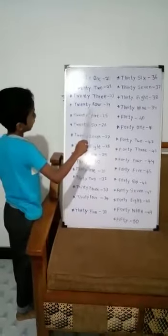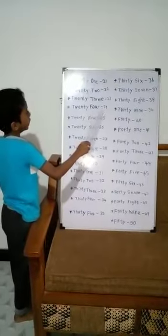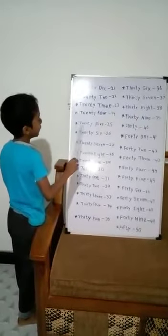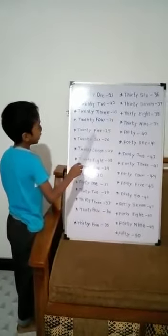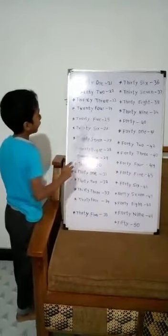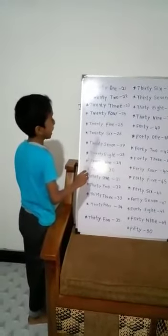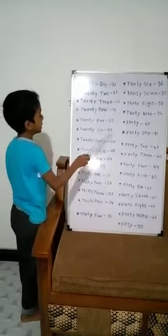Twenty, four, 24. Twenty, five, 25. Twenty, six, 26.